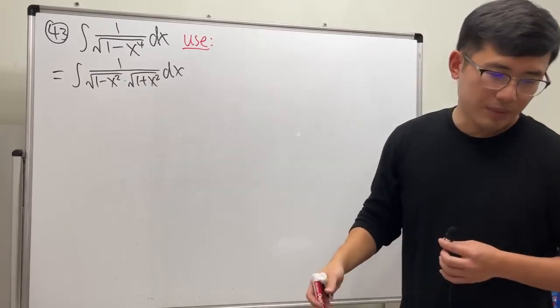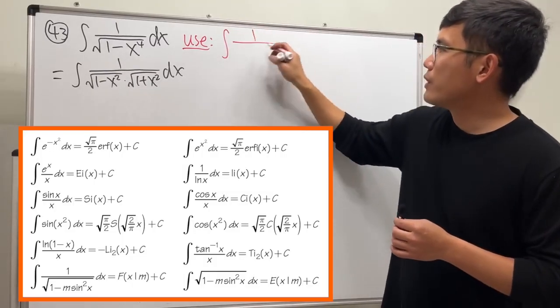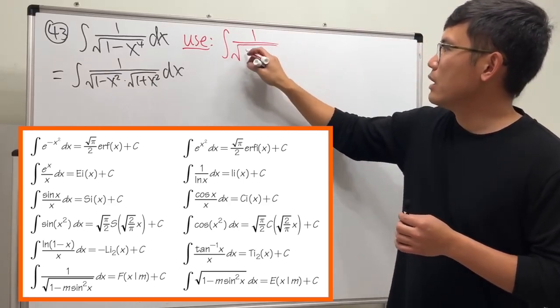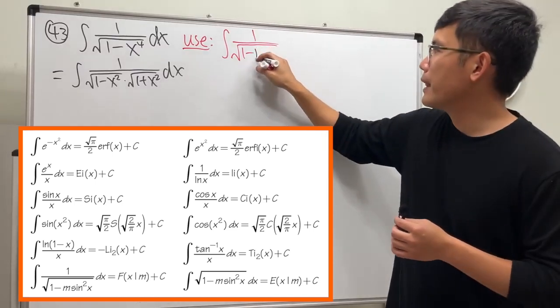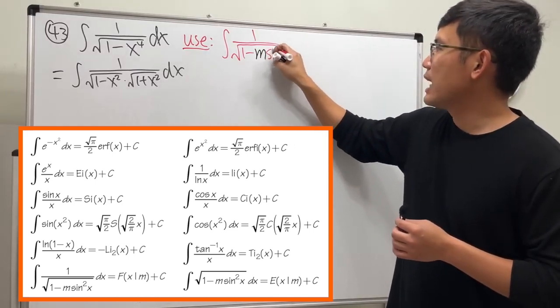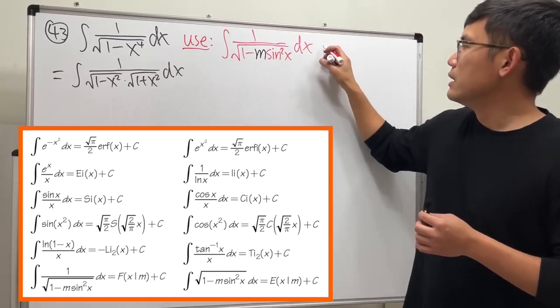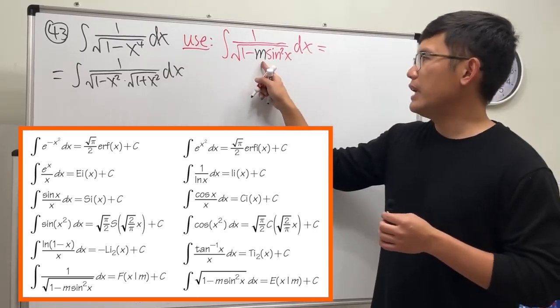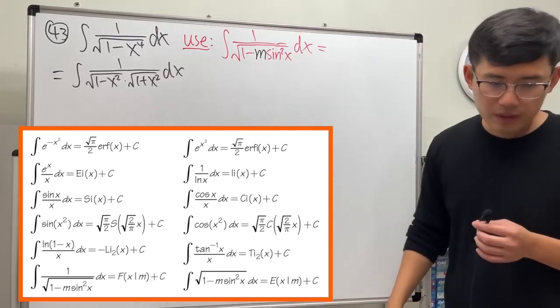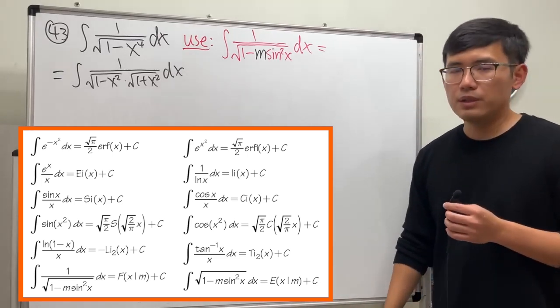Perhaps I should tell you guys the hint to make this idea more fair. If we have the integral 1 over square root of (1 minus m times sine squared x) dx—by the way, if m equals 1, you should be able to figure that out easily. But if m is not equal to 1, then it's bizarre.